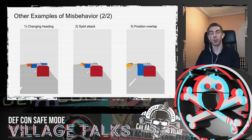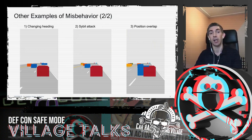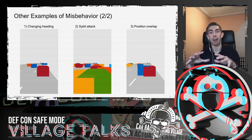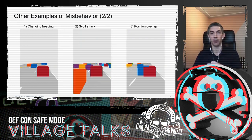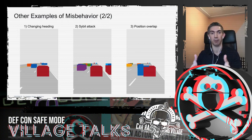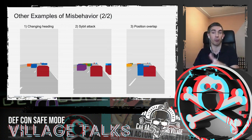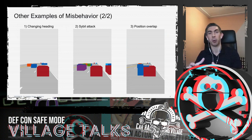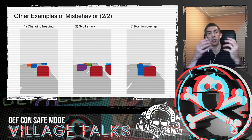In the middle is a Sybil attack, where an attacker uses multiple valid certificates — say 20 per week — and sends 19 as ghost vehicles that can be moved at will. This creates a very noisy environment for connected and automated vehicles. On the right is a position overlap attack, where an attacker overlaps their position with other vehicles, even with your own. These are all authenticated messages with wrong content — that is misbehavior.